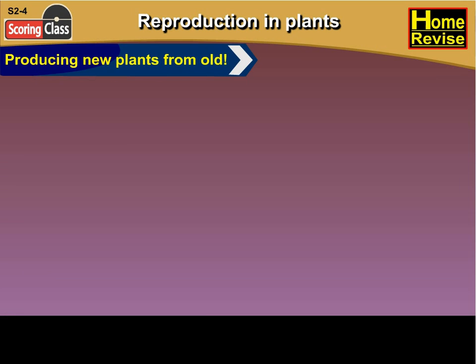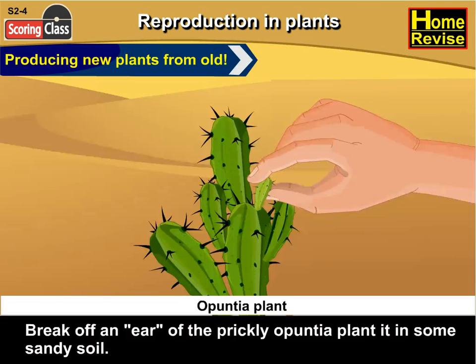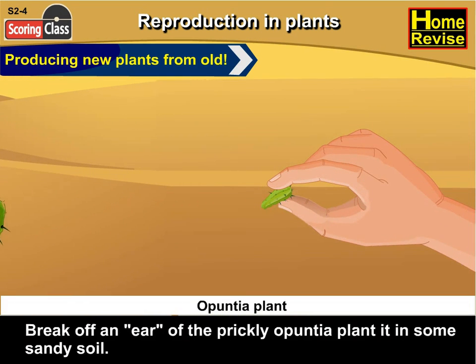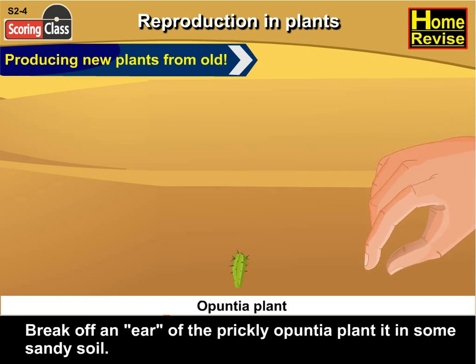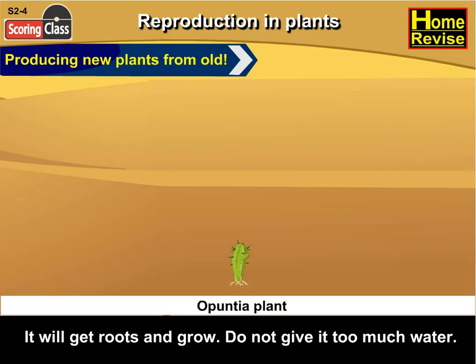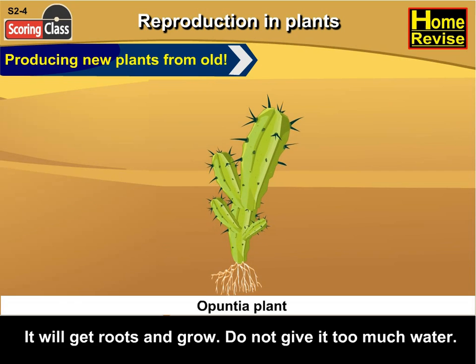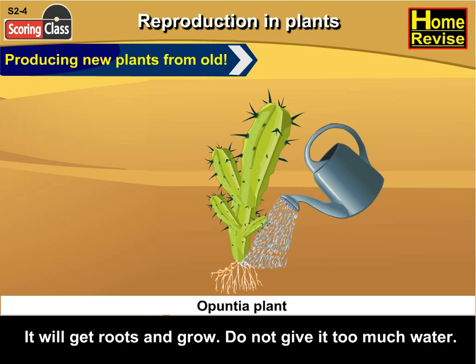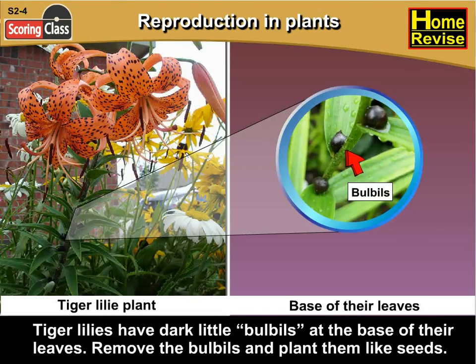Producing new plants from old. Break off an ear of the prickly opuntia and plant it in some sandy soil. It will get roots and grow. Remember, do not give it too much water. Tiger lilies have dark little bulbils at the base of their leaves. Remove the bulbils and plant them like seeds.